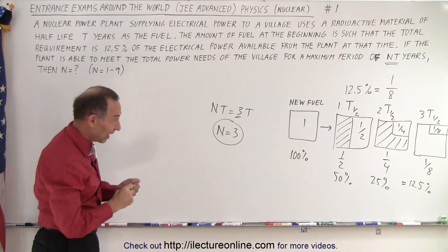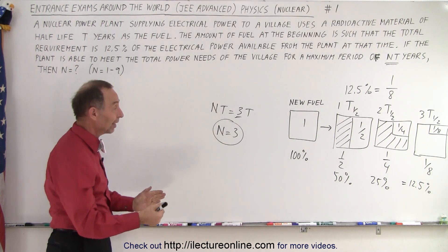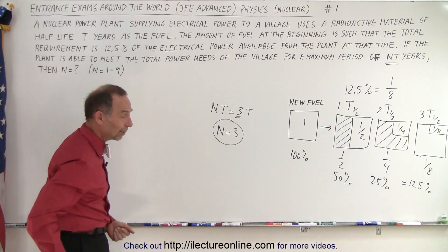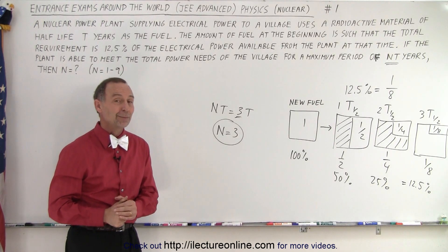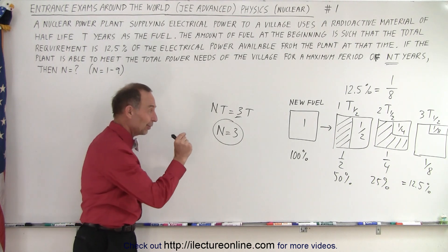If you understand that, you could probably do this problem in a matter of just a few seconds, realizing one half-life, two half-lives, three half-lives is down to one eighth, 12.5 percent, n must be three, and you move on to the next problem. So it's easy if you understood that.